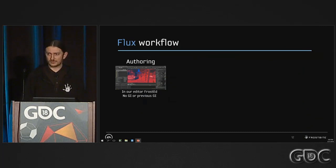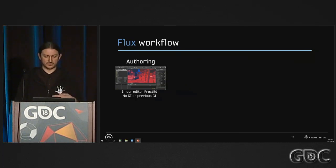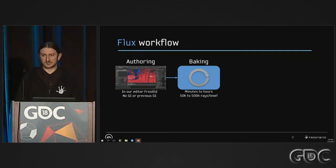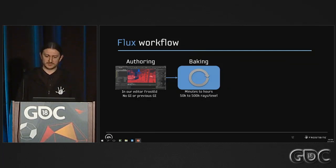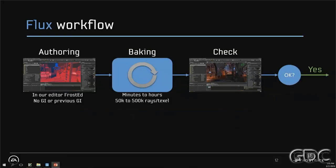So what about the workflow? What do artists have to do to obtain those results? First, they have to open our editor called Frostbite. If it's a new level, they have to start from scratch; otherwise, they will have the previous GI visible. Then they have to author the scene — move lights, move meshes, do what they want to achieve. Then they start a baking process, which can take from a few minutes to hours depending on the quality you want. Then you check the result — if that's what you wanted, great, next task. If not, rinse and repeat: go back to the start and iterate.